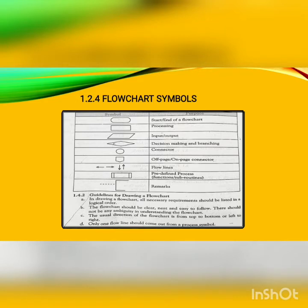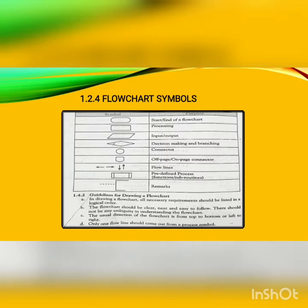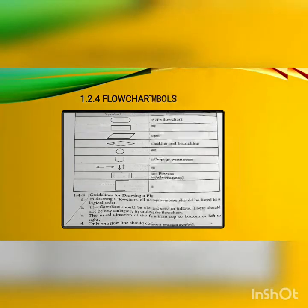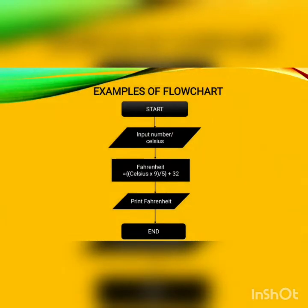Here are a few guidelines for drawing a flowchart. All necessary requirements should be listed in a very logical order. The flowchart should be clear, neat and easy to follow — there should not be any uncertainty in understanding it. The usual direction of the flowchart is from top to bottom or left to right. Only one flow line should come out of a process symbol.